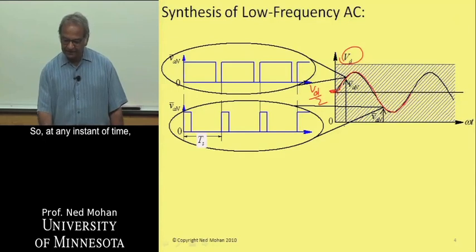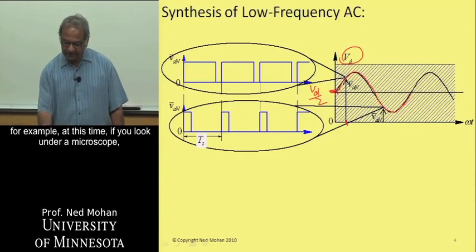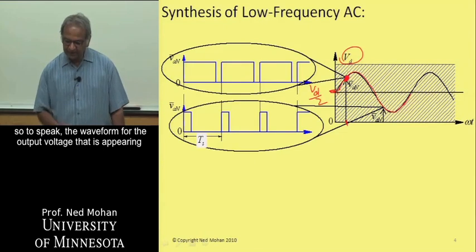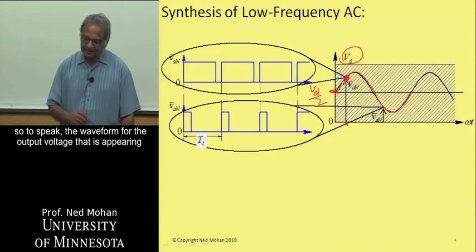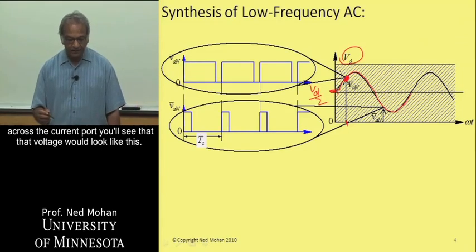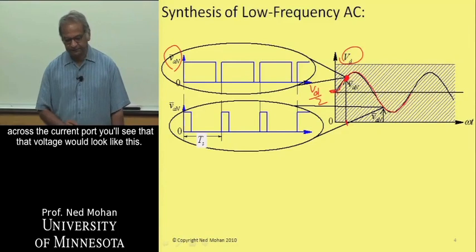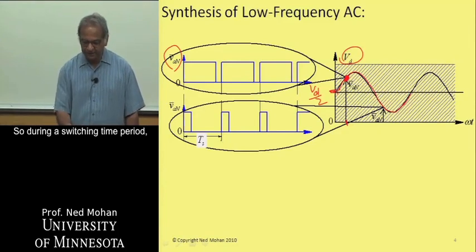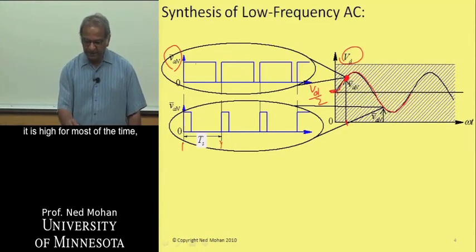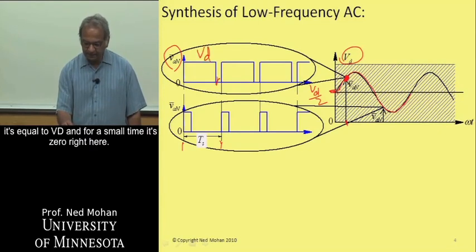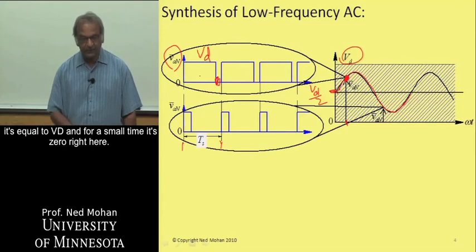So at any instant or time, for example at this time, if you look under a microscope, so to speak, the waveform for the output voltage that is appearing across the current port, you will see that voltage would look like this. So during a switching time period, it is high for most of our time, it's equal to Vd, and for a small time, it's zero right here.